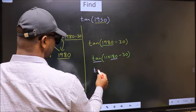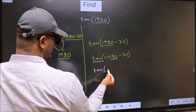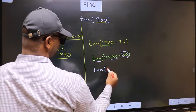So tan is not going to change. It will remain tan. And inside, we get this angle, 30.